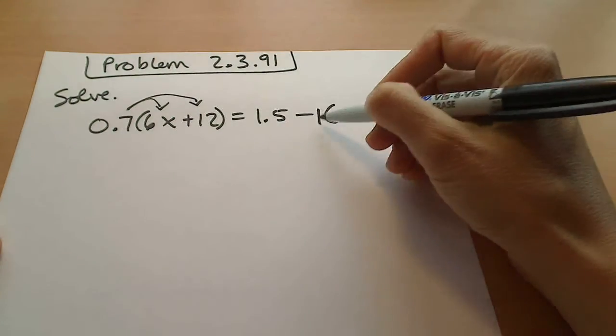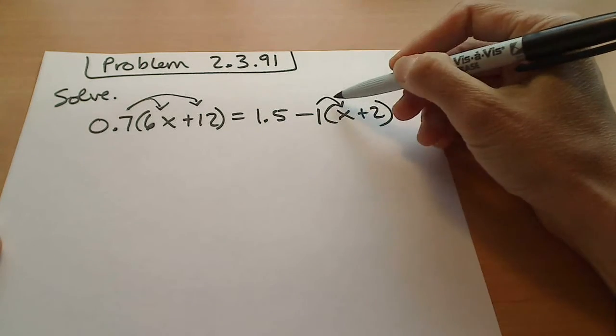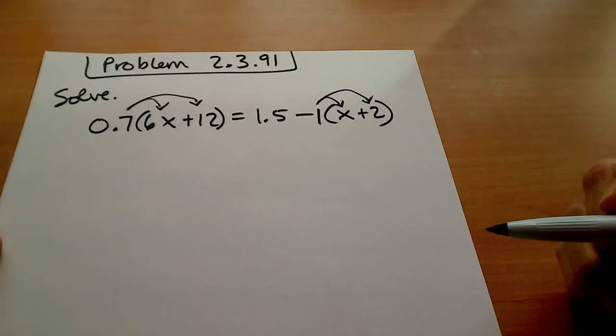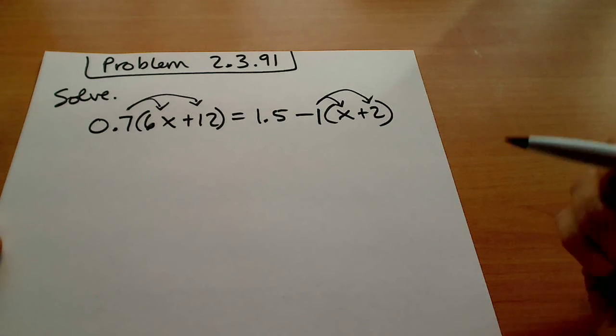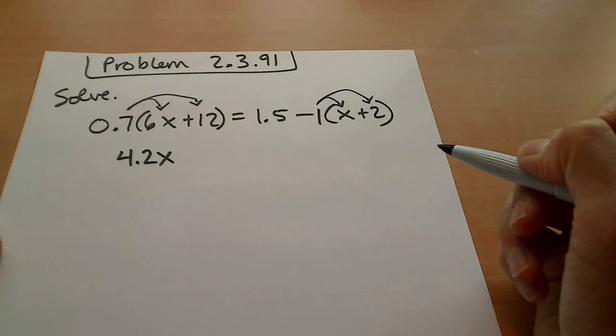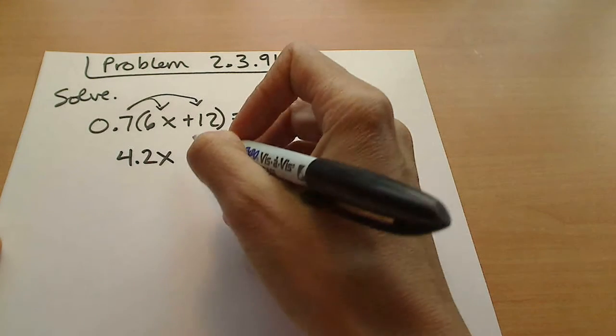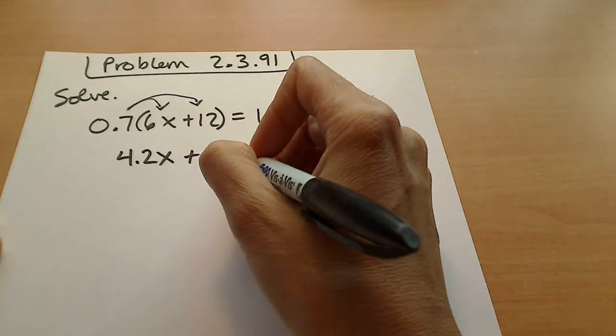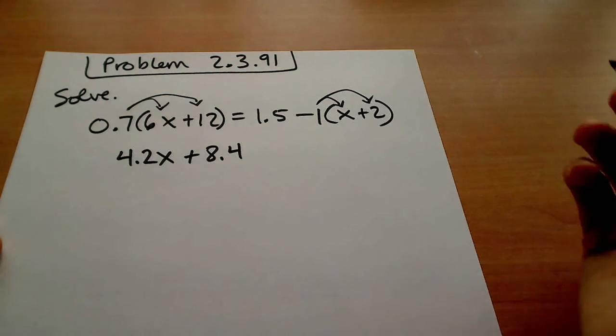Okay, so 0.7 times 6x, we're gonna have 4.2x, and 0.7 times the 12 is going to be 8.4. This is equal on the other side to 1.5 minus x and minus 2.